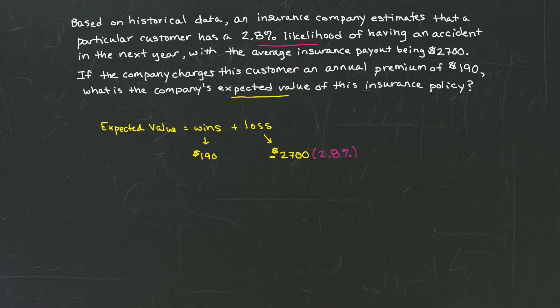That means the unlikelihood of having an accident, or the percentage attached to the wins, has to be the difference between 100% and 2.8%. So the leftover part or the complement of 2.8% is going to be 100 minus 2.8%. Does that make sense?